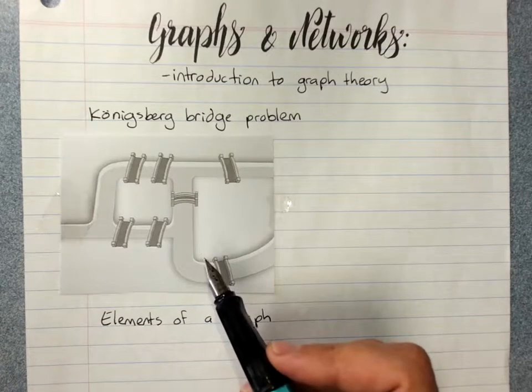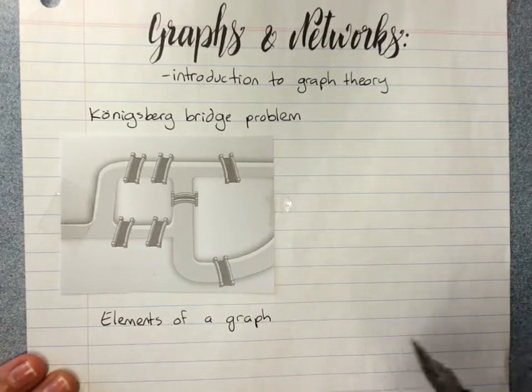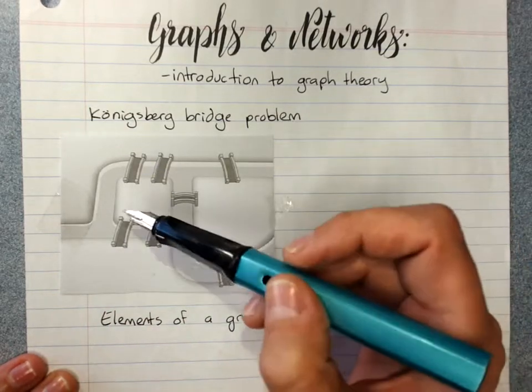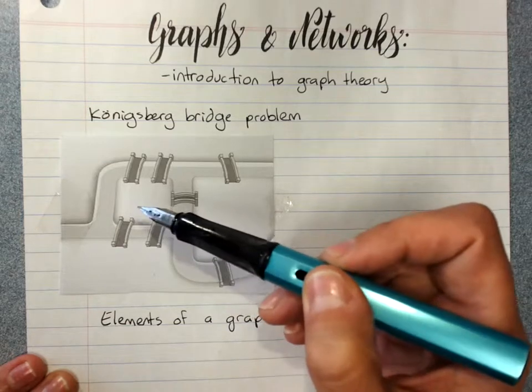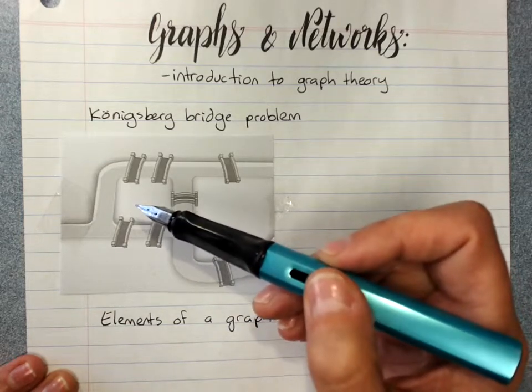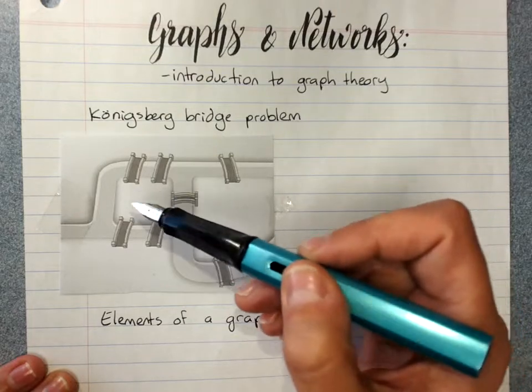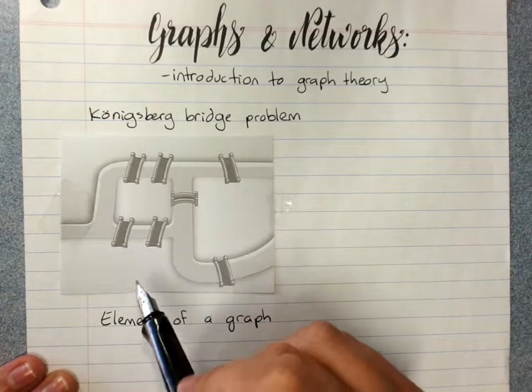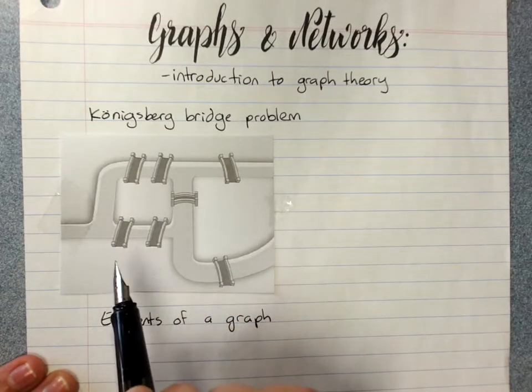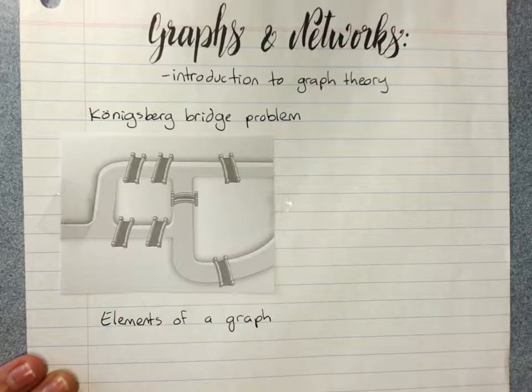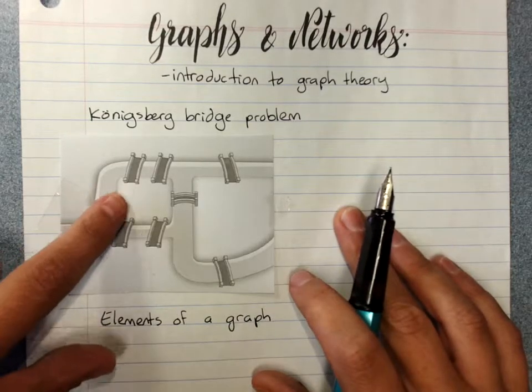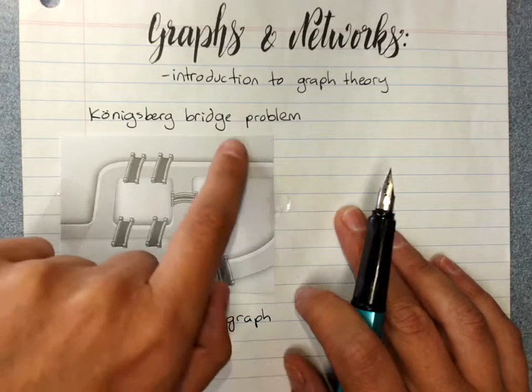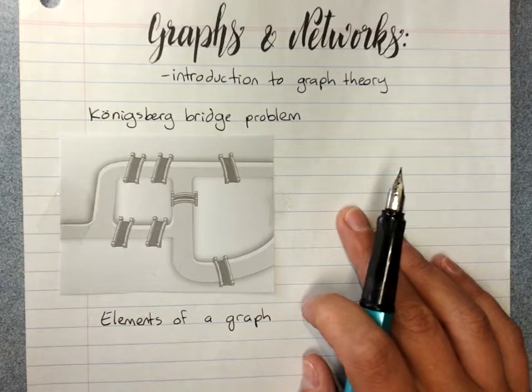And the problem, which was actually quite well known in 18th century Europe, they probably didn't have much, this would have been posted on their Facebook pages, solve this problem. Can you walk over all the bridges once and once only? That is, is there a path that you can take where you cross every bridge only once? And so any time anyone tried it, no matter where they started or how they did it, they end up either missing a bridge or doubling up on a bridge.